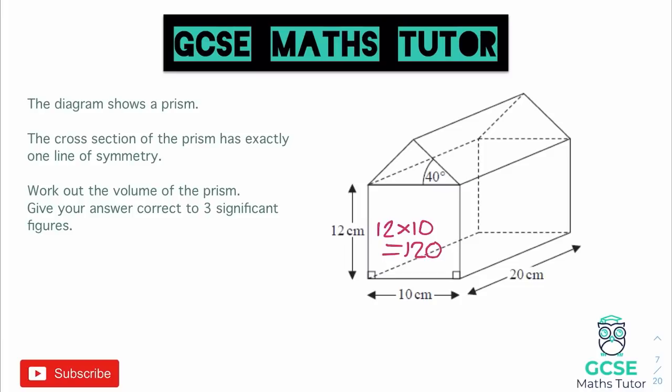Now for the area of the triangle, let's think about what we need. To get the area of a triangle, we do base times height divided by 2. We could also use half ab sin C since we have a calculator, but I'm going to work it out step by step. We have the base, which is 10, but we don't have the height. So that angle of 40 degrees is going to help us to find the height.